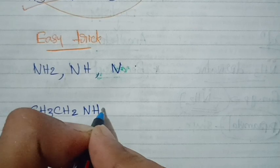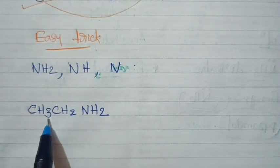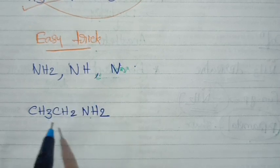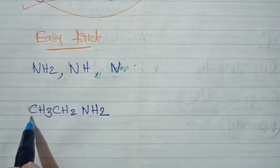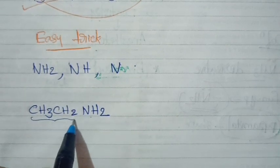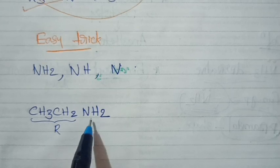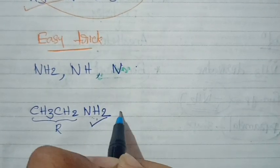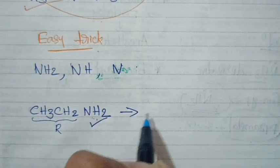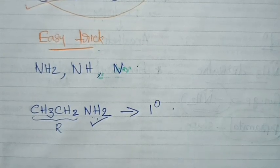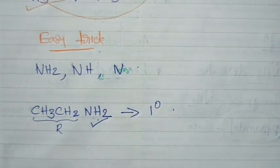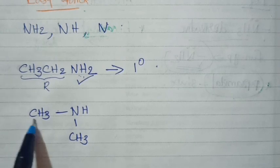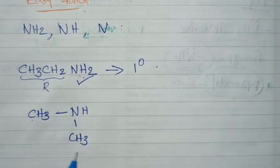Let's write an example. CH3-CH2-NH2. Here, CH3-CH2 is the R group. In this amine, we can confirm that this is a primary amine because it contains NH2 — of the form R-NH2.